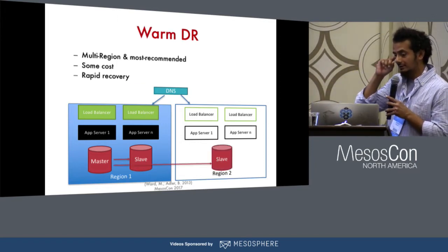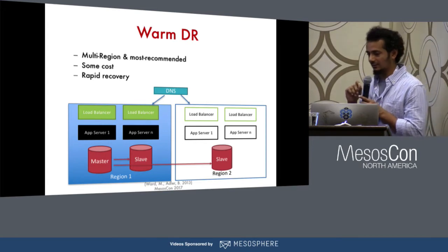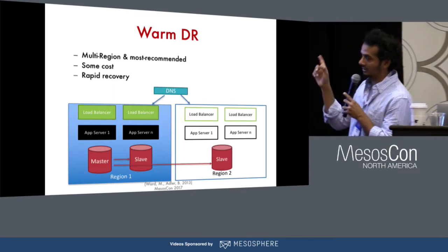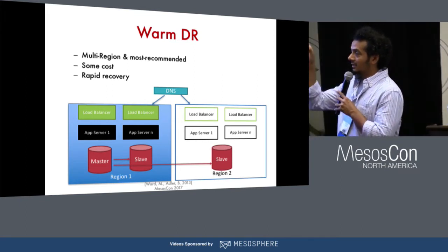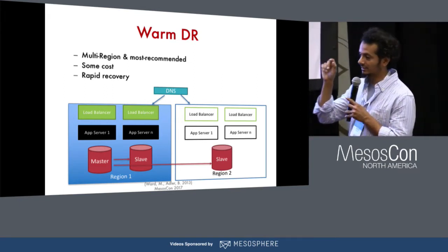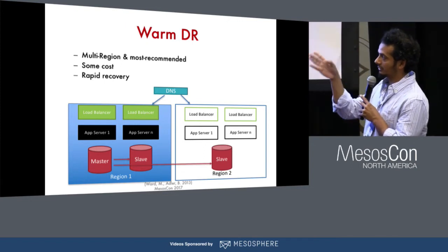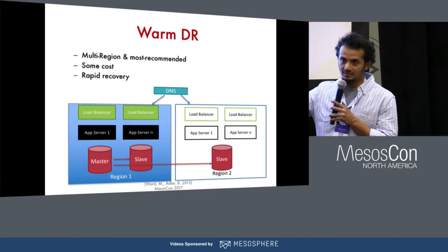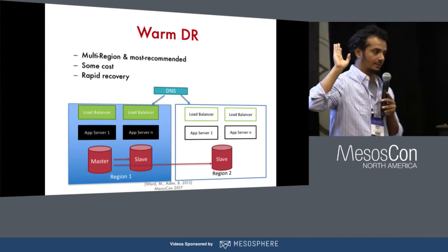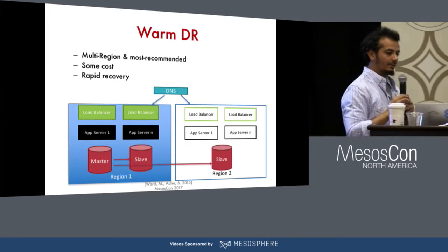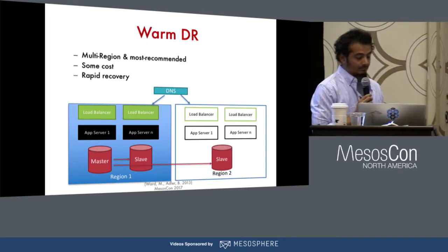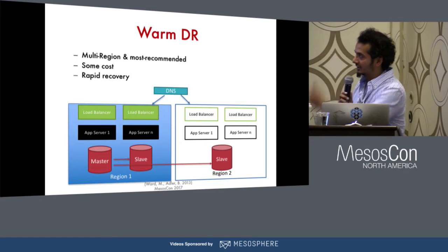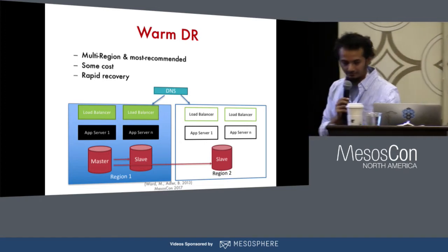The most common approach is warm DR. It's similar to cold DR, except that you are doing a live replication of your database to another region. Other things are staged — they're not running. As soon as something happens to region one, you can start region two. It can connect to the slave database there and start serving traffic. It's extremely rapid — better than cold DR. There is some cost since you're running this database in region two.